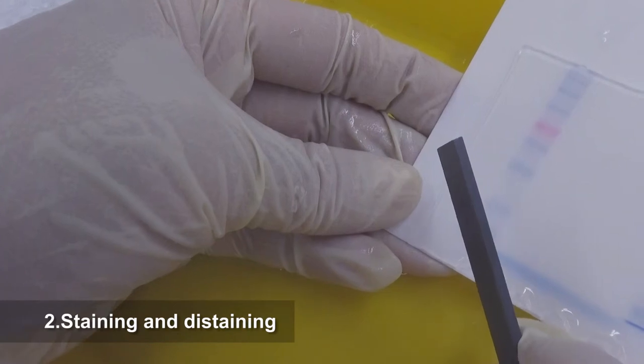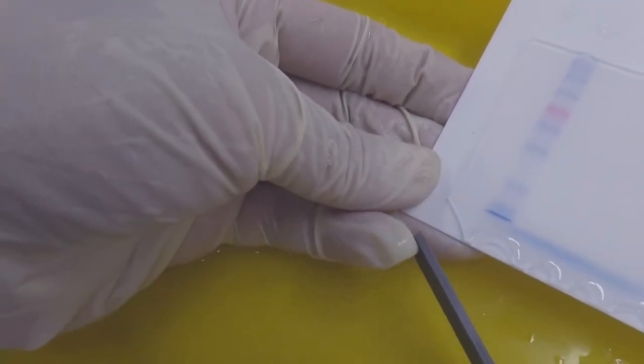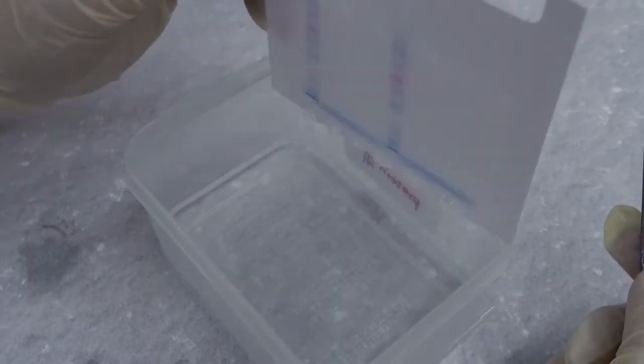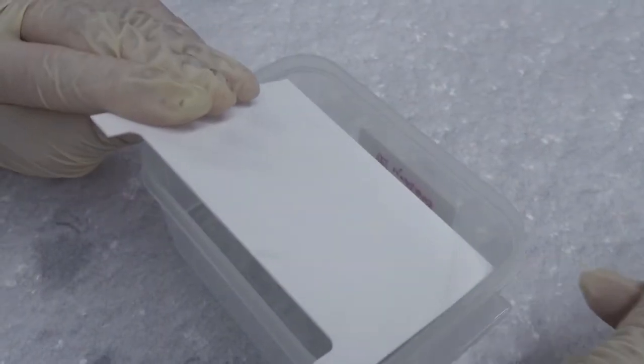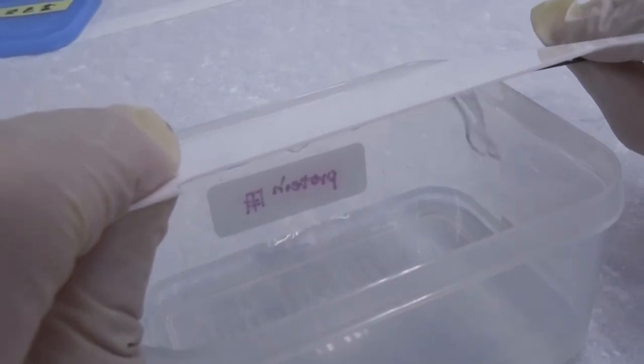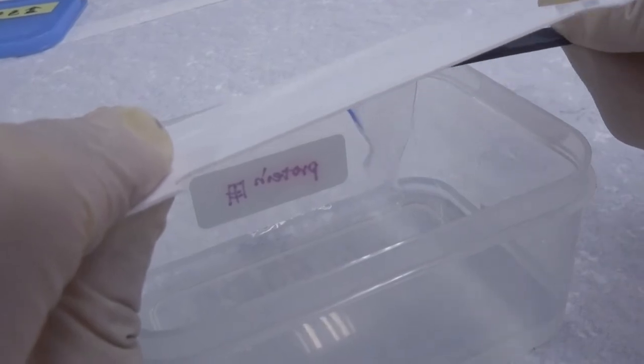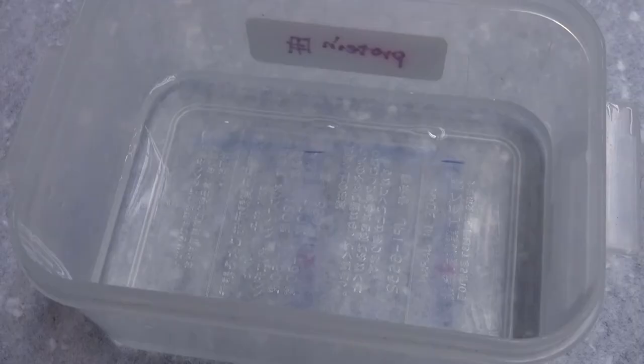Staining and destaining. Cut away the lower left corner of the gel as a reference of orientation. Inverse the aluminum plate so that the attached gel faces downward. Use a spacer to peel the gel down to the staining box containing 25 ml deionized water. You may see the gel slides down acceleratedly due to gravity.